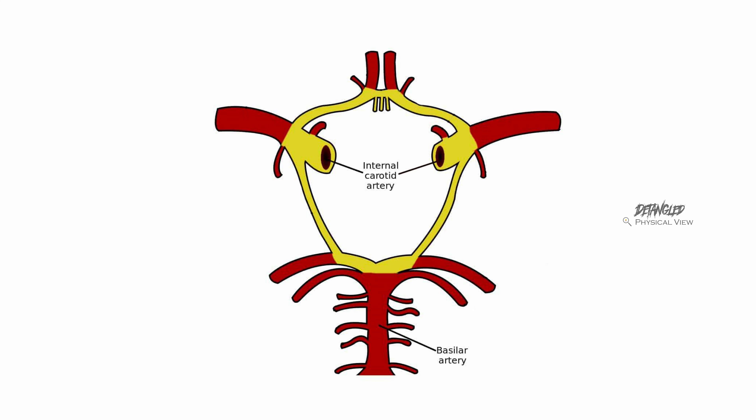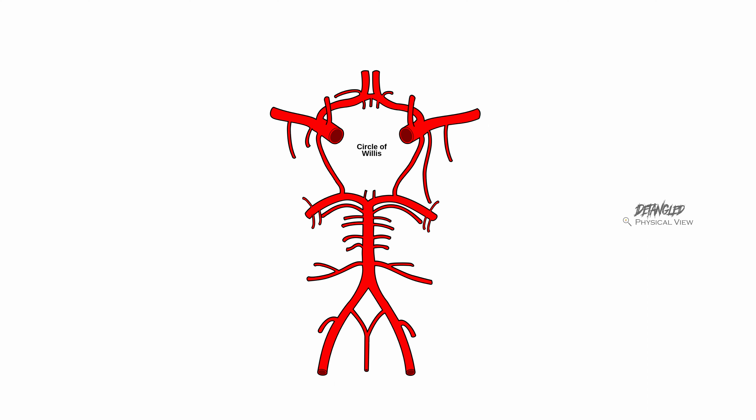Formation: The Circle of Willis is formed by branches of the internal carotid arteries and posterior branches of the basilar artery. Anterolaterally, there are anterior cerebral arteries. Anteriorly, there is the anterior communicating artery, which connects the anterior cerebral arteries.